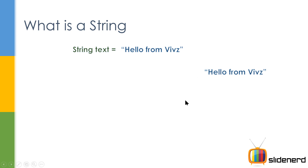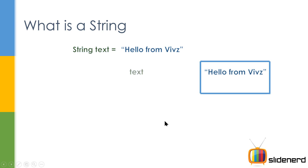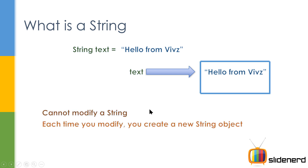Here you have 'hello from Veeves', the normal piece of text. This is somewhere inside the memory — you don't know where it is. But your variable 'text' is actually pointing to this location, so you get the data in your program directly. So here is something you guys need to remember: you cannot modify a string. Every time you modify it, you're creating a new object.